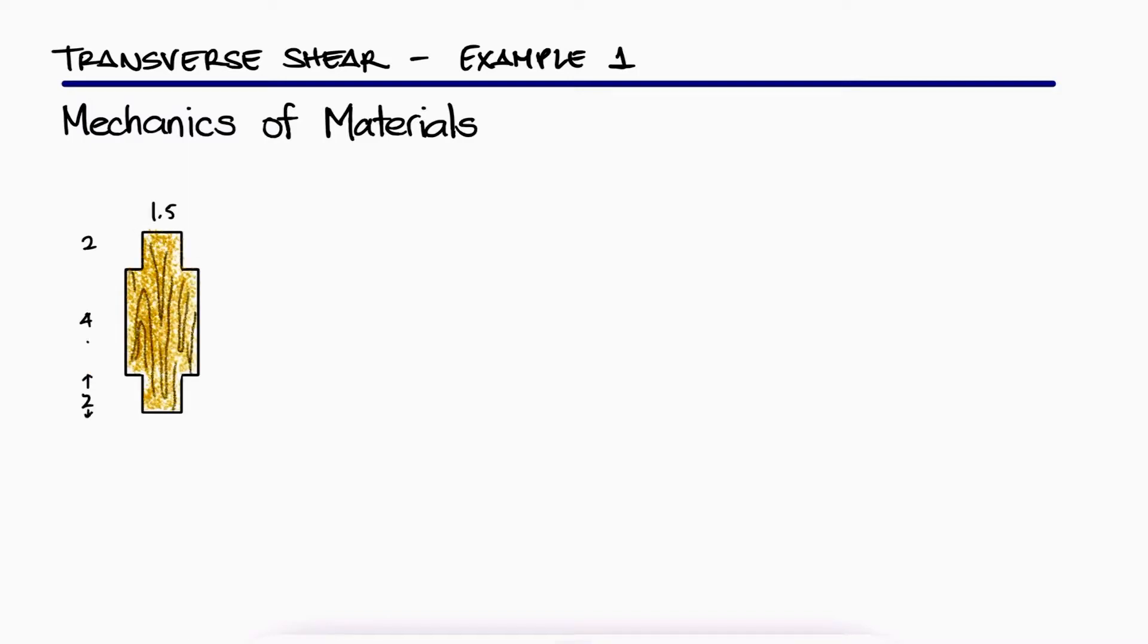For a timber beam having a cross-section shown, what is the largest allowable vertical shear if the shearing stress is not to exceed 150 psi?